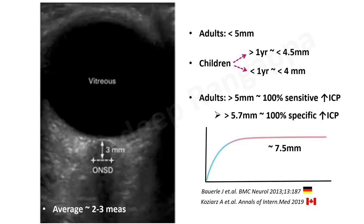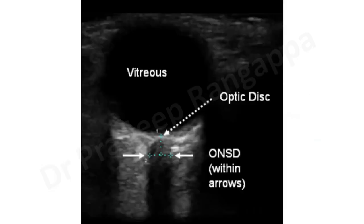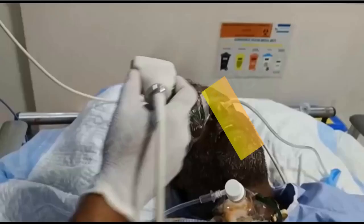It's a very simple test. Once you keep the vascular probe in the transverse position, you will very clearly see the structures. You take three millimeters from the optic disc, then take a transverse diameter from end to end. If it is more than five millimeters, it suggests ICP is high — 100% sensitive. More than 5.7 millimeters is 100% specific that ICP is elevated.